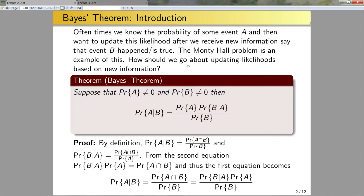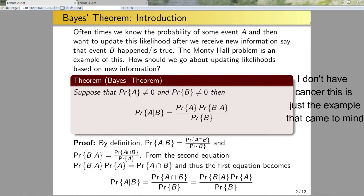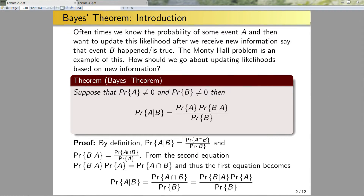So now I've just given you a new theorem that lets me take the likelihood that some event A happened and then, given new information, computes the likelihood that A still happens after this new information. How exactly does this work? Let's give a concrete example instead of talking about these vague A's and B's and see how this would work in practical real-world cases.